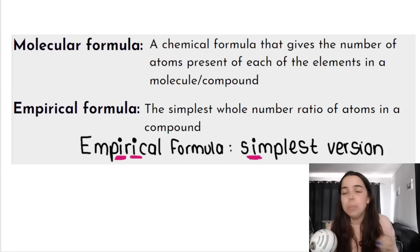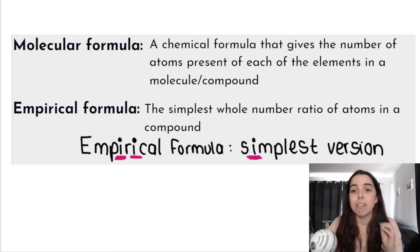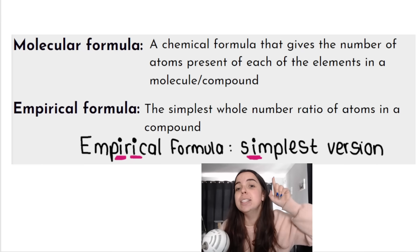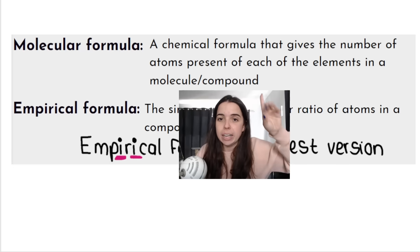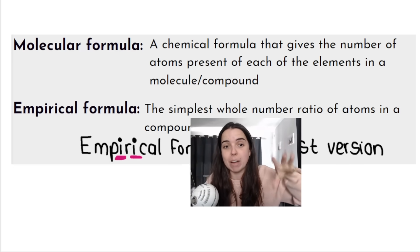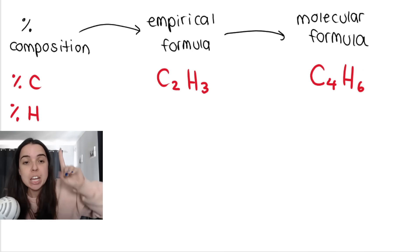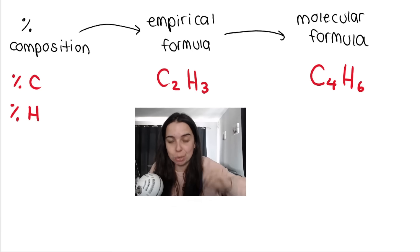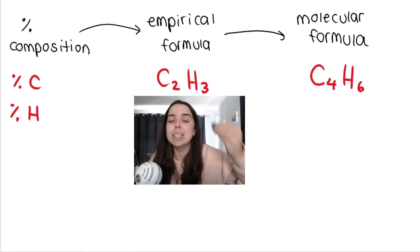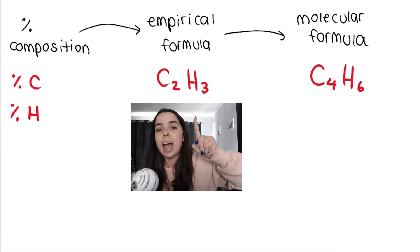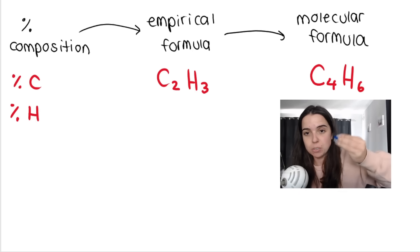As a super quick recap: the empirical formula is the simplest whole number ratio of atoms in a compound. How I remember it is the word 'empirical' has two i's in it and the word 'simplest' has an i in it. The molecular formula is not the simplest version of the compound. This is generally how we do these calculations: you'll be given a percentage composition, use that to calculate the empirical formula, which is the simplest ratio — like two to three, which you cannot simplify any further.